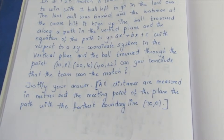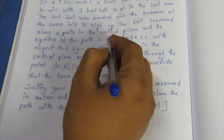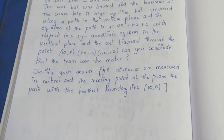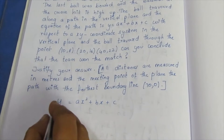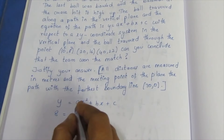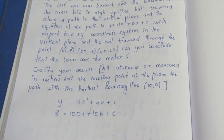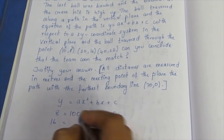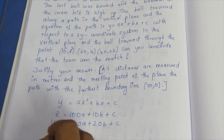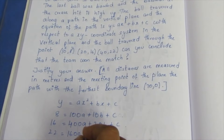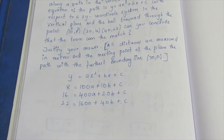We have points, and we have an equation. If we have points, we have xy to substitute and can form an equation. y = ax² + bx + c. With point (10, 8): 100a + 10b + c = 8. With point (20, 16): 400a + 20b + c = 16. With point (40, 22): 1600a + 40b + c = 22. So we have three equations and we will solve for a, b, c.